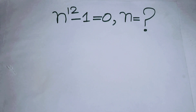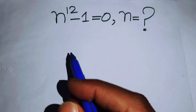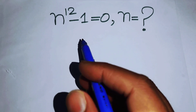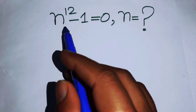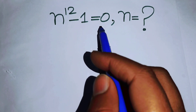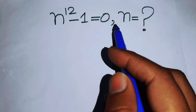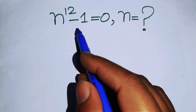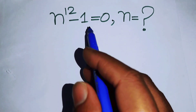Hello everyone, welcome back to the Map of Mathematics. In this video we are going to solve this nice math problem: n to the power of 12 minus 1 equals 0. We solve this problem for the values of n, finding all the 12th roots of this given equation.